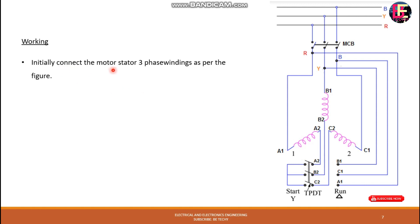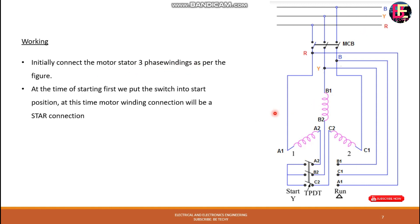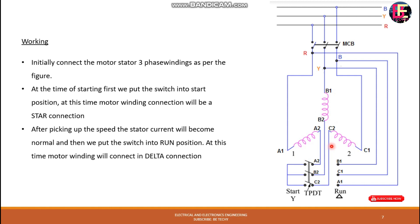Initially, we connect the motor stator 3-phase winding as per the figure. At the time of starting, first we put the switch into the star position — at this time the motor winding connection will be a star connection. Then we put the switch into the run position, and at this time the motor winding will be a delta connection.